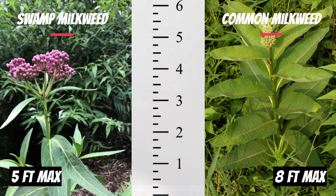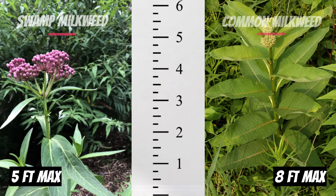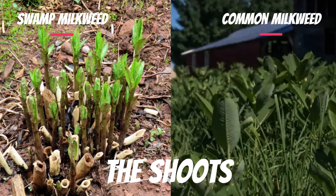The first difference between the two is that swamp milkweed can reach a height of around 150 centimeters or 5 feet. Swamp milkweed stems grow from a clump that gets larger every year and those stems open up in a fan-like fashion. Common milkweed can reach heights of 2.6 meters or 8 feet and the stems grow straight up from rhizomes. Right from the start when they come up in the spring, these milkweed species look different.